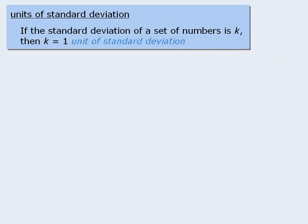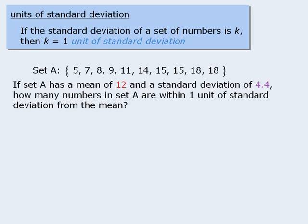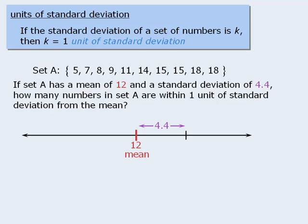Questions involving standard deviation typically look something like this. Here we have a set of numbers, and we want to determine how many numbers in that set are within 1 unit of standard deviation from the mean. Since the standard deviation of set A is 4.4, then 4.4 equals 1 unit of standard deviation. First, draw the number line and place the mean near the middle. Now mark a spot 1 unit of standard deviation to the right of the mean. Since this point is 4.4 units to the right of 12, the point is at 16.4, which is 1 unit of standard deviation above the mean.